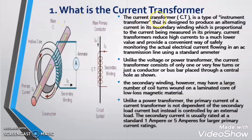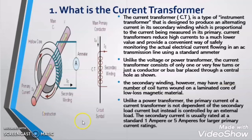Now let us understand what is current transformer. Current transformer is an instrument transformer. The working principle of current transformer is same as the power transformer or voltage transformer, that is Faraday's law of electromagnetic induction. As the power transformer or voltage transformer transforms power from one circuit to another circuit, in the same manner the current transformer is also transforming electrical power from one circuit to another circuit.